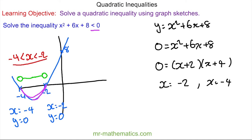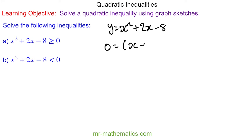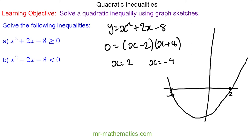Okay, let's try some more questions. Do you want to try and solve these two inequalities yourself? You can pause the video and resume it when you're ready. So again we're going to sketch a graph of y equal to x squared plus two x minus eight. We'll solve this by factorizing to find the roots — we have x minus two and x plus four — so our roots are when x is equal to two and when x is equal to negative four. We'll use these to sketch our graph, with x-intercepts at negative four and positive two, and the y-intercept at negative eight.